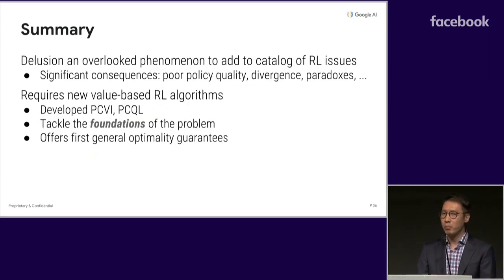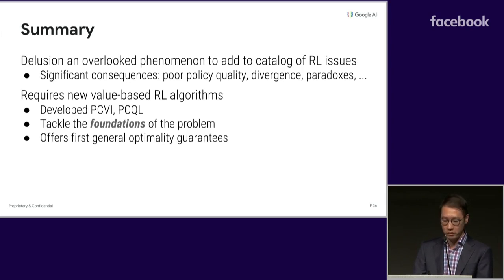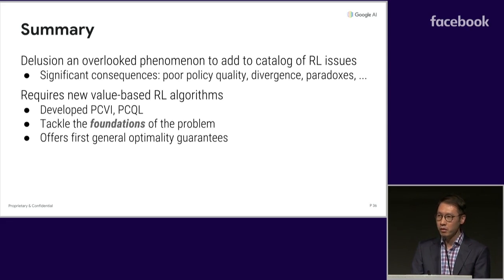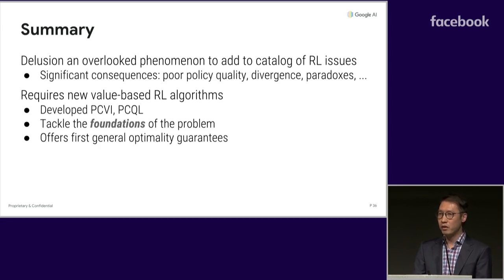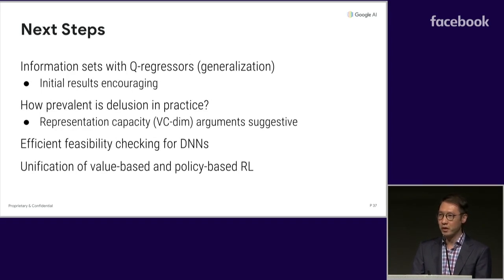Let me summarize with a couple of key points. First, we believe that delusion is an overlooked but quite important phenomenon that needs to be added to the catalog of RL problems. It can cause significant consequences including poor value approximation and a host of other pathological behaviors. We propose new value-based RL algorithms which directly tackle the foundations of this problem. Although they are not currently scalable in their current form, this raises interesting future directions: how do we incorporate concepts like information sets with large-scale Q regression? We have some initial experiments on larger domains with linear function approximation and the results look quite promising, but there's still a lot to do.